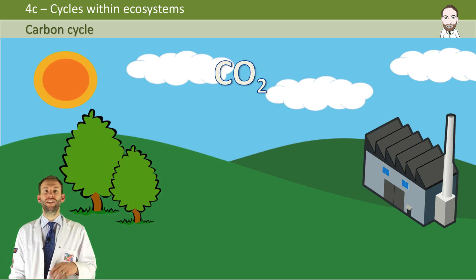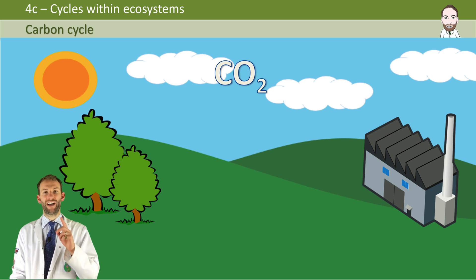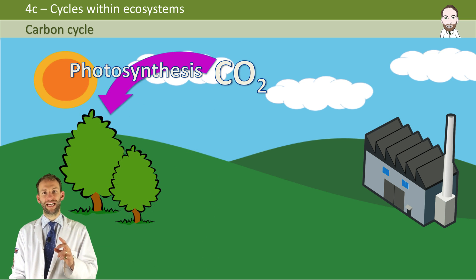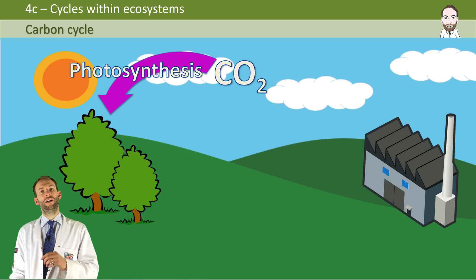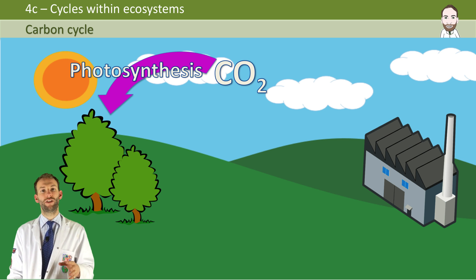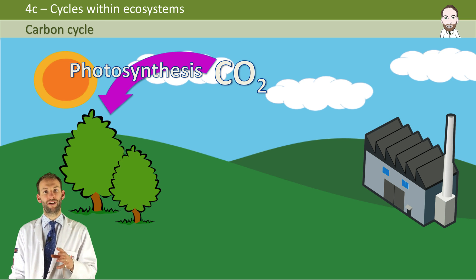Let's start off with carbon dioxide in the air. That can get into living organisms only via photosynthesis. Photosynthesis is the chemical reaction: carbon dioxide plus water goes to glucose plus oxygen. So that carbon goes into glucose in the plants.